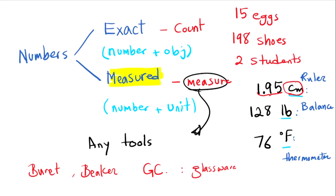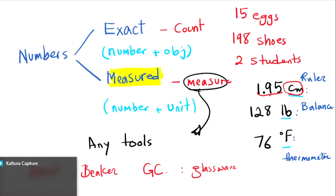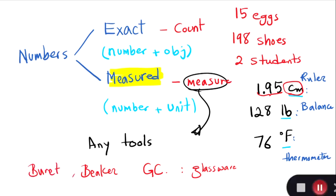It doesn't matter what is our unit. As long as we don't count the object, we call that measured numbers. Hope you understand the difference between these two in general sciences or chemistry specifically. Thank you for watching this video.